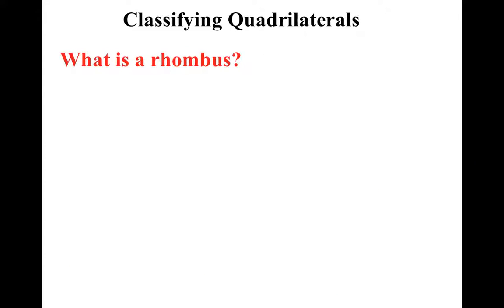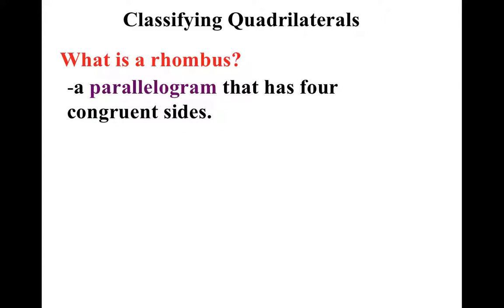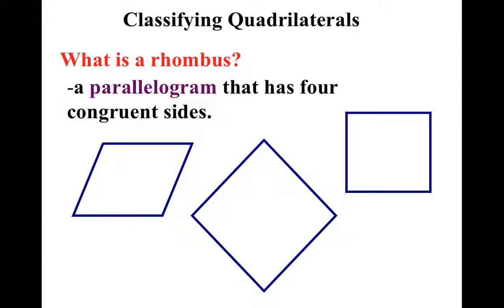So what's a rhombus? It's a parallelogram that has four congruent sides. Both pairs of opposite sides are parallel, and all sides are the same length. You might say, hey, this is a diamond — you're right, it is a diamond, just like in baseball. Both pairs of sides are parallel and all sides are equal.